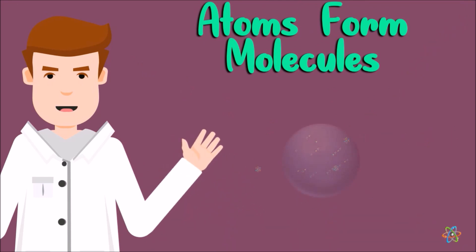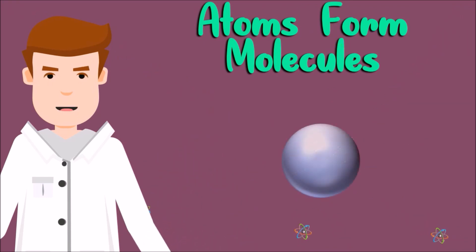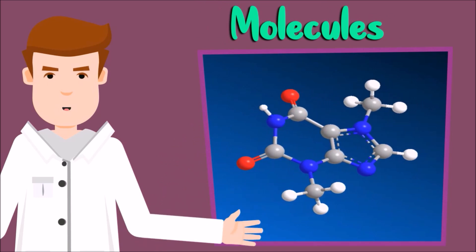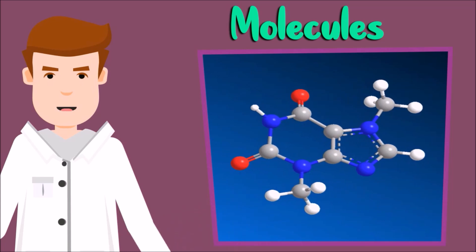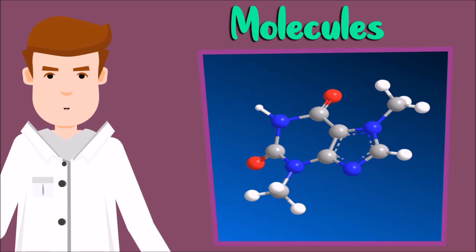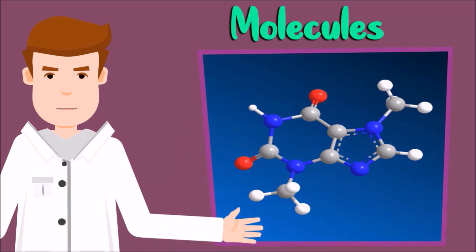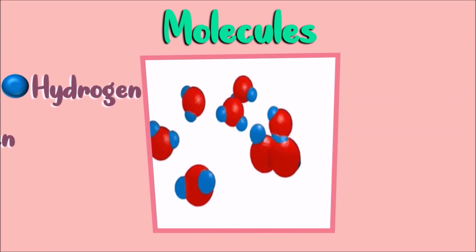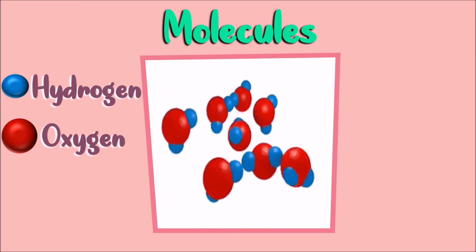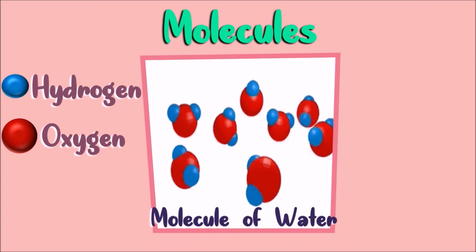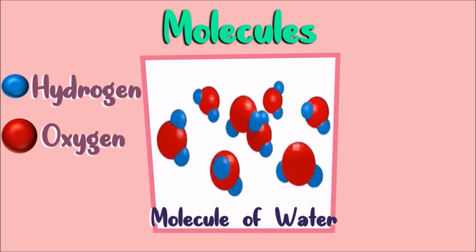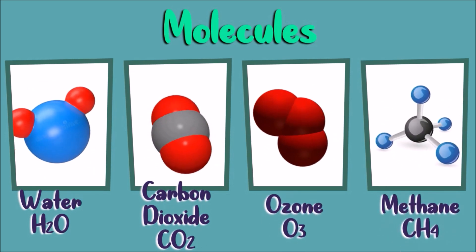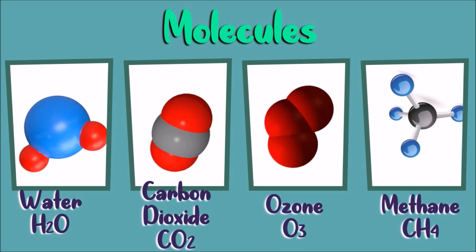If you combine atoms together, they form a molecule. A molecule is still made up of smaller particles called atoms. Each element is made up of an atom. When atoms combine, they form a molecule. Atoms in molecules are held by chemical bonds. For example, two hydrogen atoms are bonded together with one oxygen atom, forming a molecule of water. A molecule can be a combination of the same kind of element or a combination of different kinds of elements.